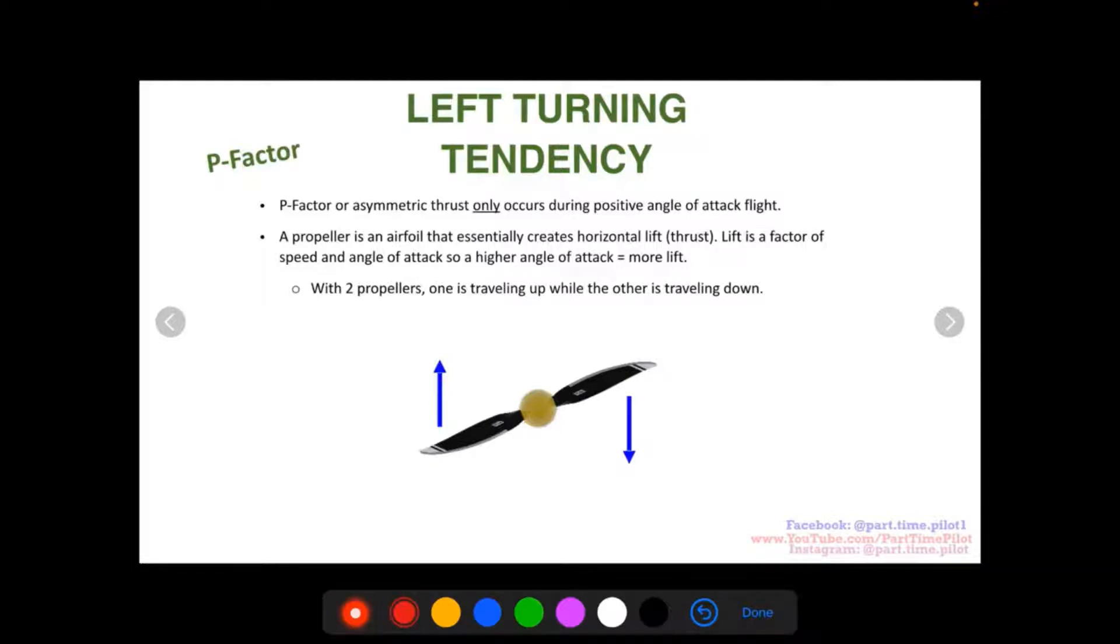So a propeller has a similar cross sectional shape that creates lift, but it doesn't create lift vertically like the wing does. It creates lift horizontally. So where a wing creates a force vertically, perpendicular to the flight path, the propeller creates a force parallel to the flight path. And that's thrust.